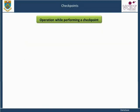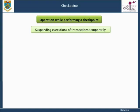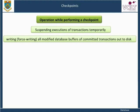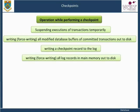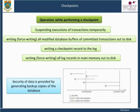Performing a checkpoint consists of the following operations: suspending execution of transactions temporarily; force writing modified database buffers of committed transactions out to disk; writing a checkpoint record to the log; and force writing the log record in main memory out to disk. A checkpoint record usually contains additional information including a list of transactions active at the time of the checkpoint. Many recovery methods, including the deferred and immediate update methods, need this information when a transaction is rolled back. In addition to the log, further security of data is provided by generating backup copies of the database held in a separate location to guard against destruction in the event of fire, flood, or disk crash.